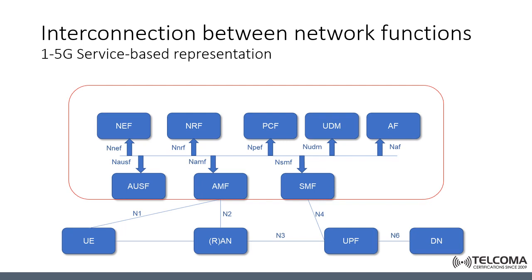The network functions within the 5G core control plane shall only use the service-based interface for their interaction. So if we have any communication with an AMF node, the other core network control plane functions accessing the AMF function will use an interface called NAMF. And for SMF, we will have the equivalent interface name NSMF, and so on.